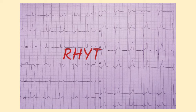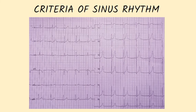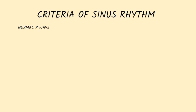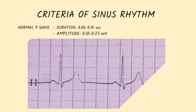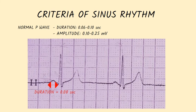When reading an ECG, you have to decide whether the heart's rhythm is normal or not. The sinus rhythm is defined by the following criteria on an ECG: the presence of a P wave in all leads, which is positive in most leads, excepting AVR where it is negative. The duration of a normal P wave ranges from 0.06 to 0.10 seconds and the amplitude ranges from 0.10 to 0.25 mV. In our case, the duration is 0.08 seconds and the amplitude is 0.10 mV.